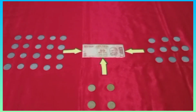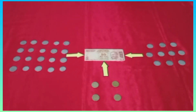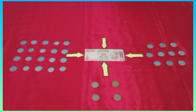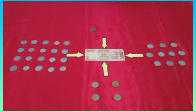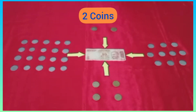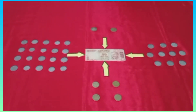Dear students, let us see how many 10 rupee coins equal a 20 rupee note. It's 10, and 10 plus 10 is 20. So students, the value of 2 ten-rupee coins is equal to 1 twenty-rupee note.